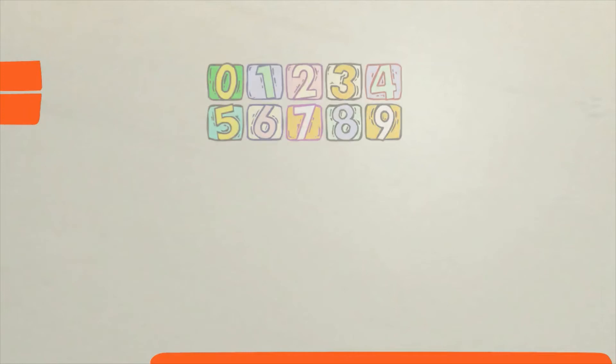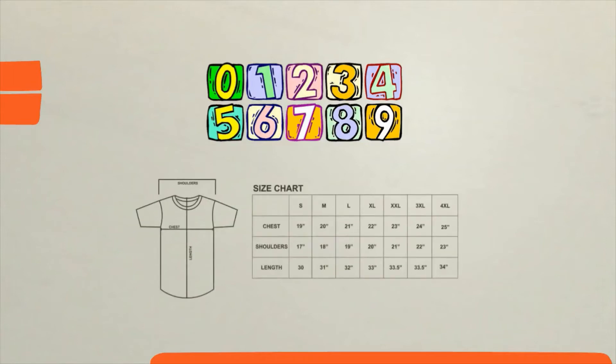In most cases, a story point uses the Fibonacci sequence as a scale for sizing. Some teams will use t-shirt sizing as a measure.